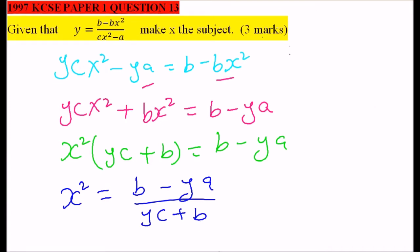So we now have x squared. We get the square root for both sides. So x is equals to the square root of b, not b squared but b, minus ya, all this divided by yc plus b.